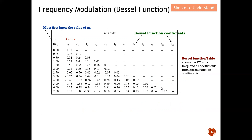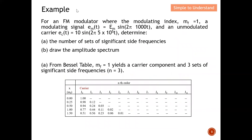Let's go to the first example. For an FM modulator where the modulating index mf equals one, we are given a modulating signal from which I can conclude the modulating frequency is 1 kHz. The unmodulated carrier signal tells me that the amplitude of the carrier Ec equals 10 volts and the carrier frequency is 500 kHz. The question asks us to find the number of sets of significant side frequencies and to draw the amplitude spectrum.